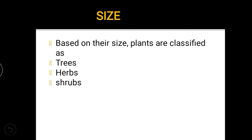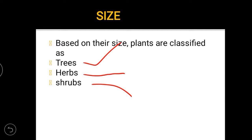Based on their size, plants are classified into three types: Trees, Herbs, and Shrubs. Trees — T-R-E-E-S. Herbs — H-E-R-B-S. Shrubs — S-H-R-U-B-S. Based on size, plants are classified into these three types.